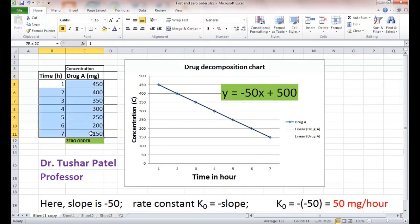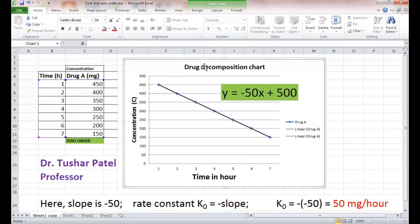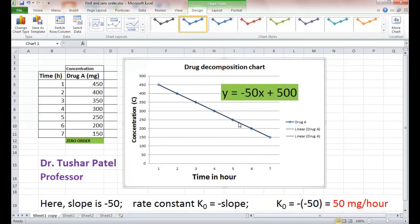This data of drug A are plotted in the graph. You can see the characteristic zero order graph, that is the straight line. The concentration versus time graph is a straight line.